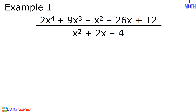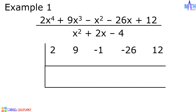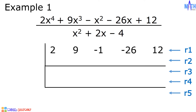The coefficients are positive 2, positive 9, negative 1, negative 26, and positive 12. We will draw these lines since we need 5 rows: row 1, row 2, row 3, row 4, and row 5.